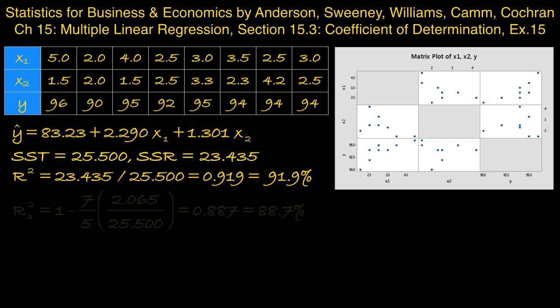And then adjusted r-squared, a slightly more complicated formula, but we just plug in all the values and calculate it out. And it comes to 0.887, which is expressed typically as a percentage, 88.7%.